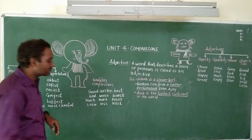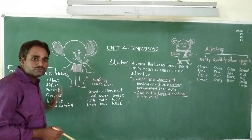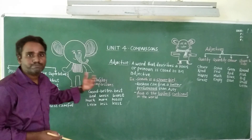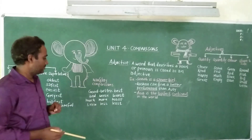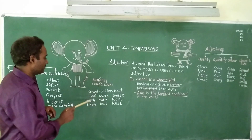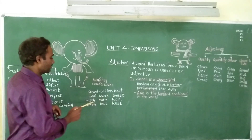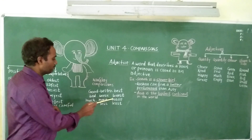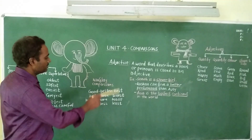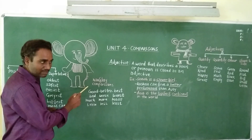And children, there are some irregular comparisons. We cannot use these rules while making the comparative form of these words. For example: good, better, best. Bad, worse, worst. Much, more, most. Little, less, least. These are known as irregular comparisons — remember them.